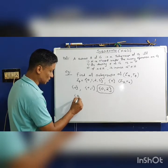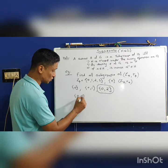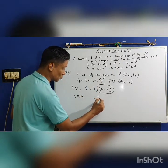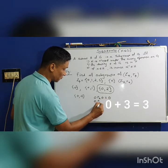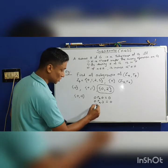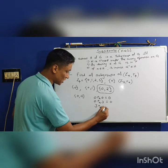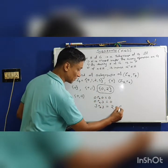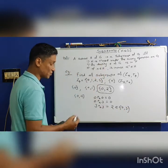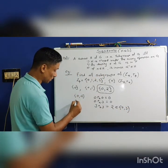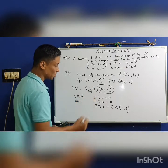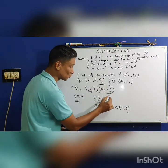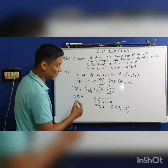Now consider the set {0, 3}. Checking closure: 0 +4 0 = 0, 0 +4 3 = 3. But 3 +4 3 = 6, divided by 4 gives remainder 2, and 2 is not a member of {0, 3}. So the closure property is violated, and this is not a subgroup.